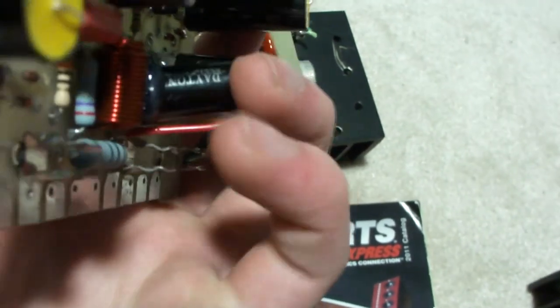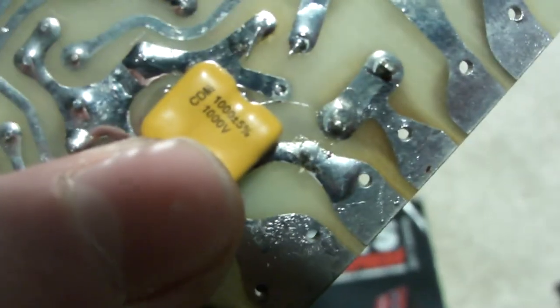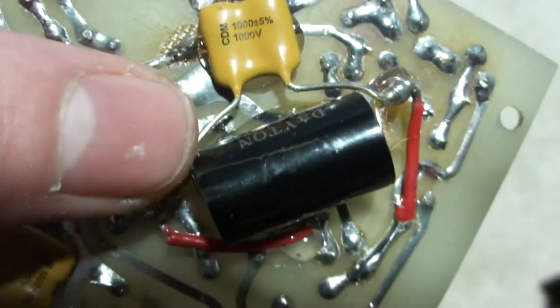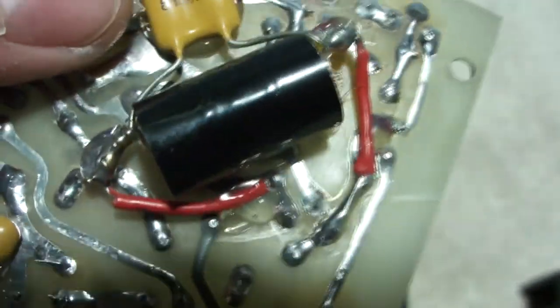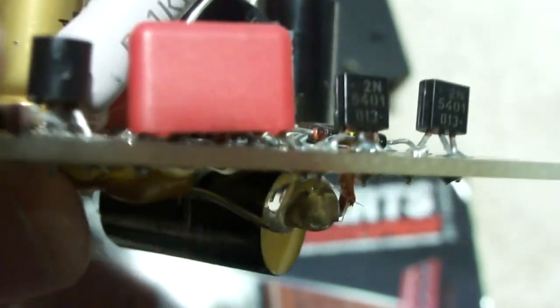I believe this is C10 that I bypassed down here with this 1000 picofarad cap. That's also what the Musical Concepts mod manual says to do. Then also 0.1 microfarad cap in parallel with another 1000 picofarad cap to bypass Q8, the emitter and collector of Q8, which is a PN4392A. That supposedly removes junk.